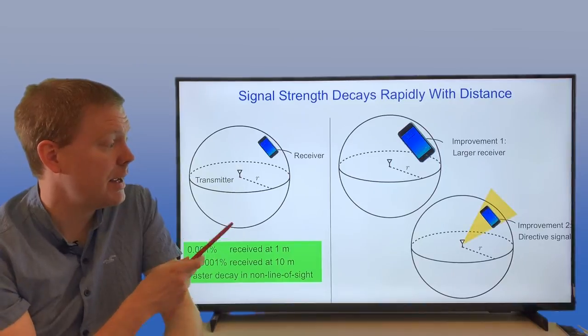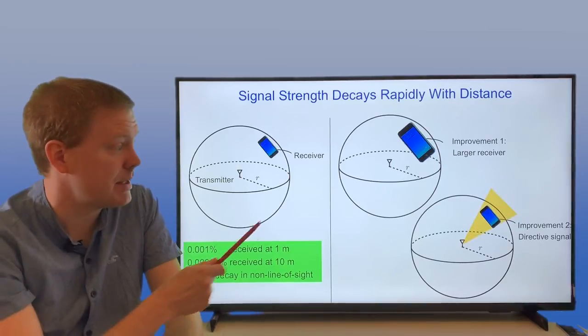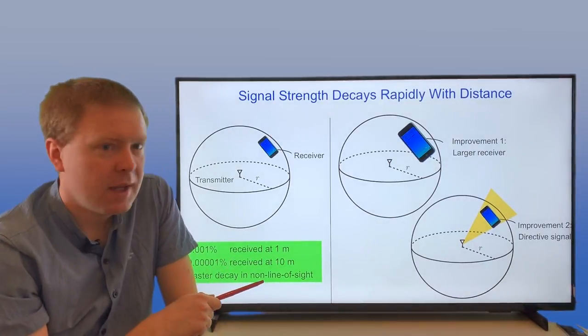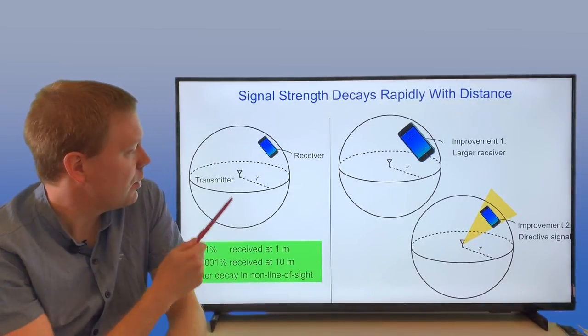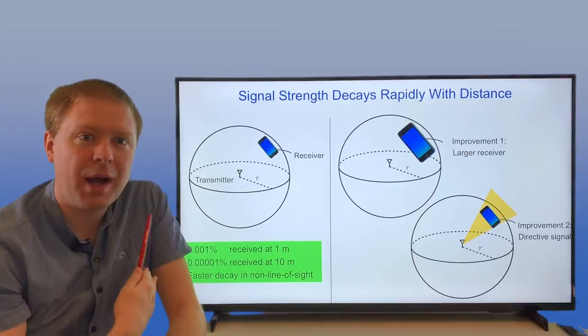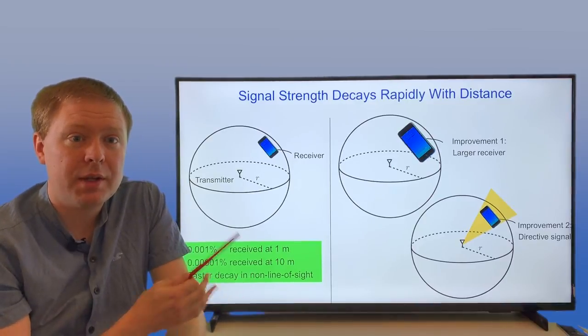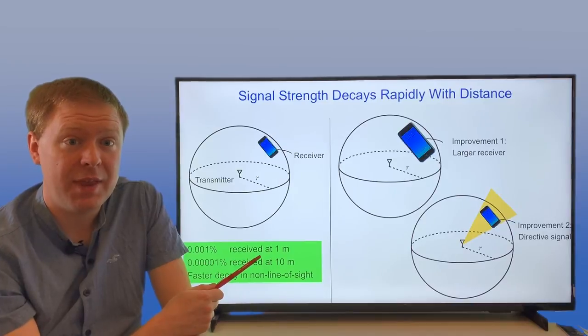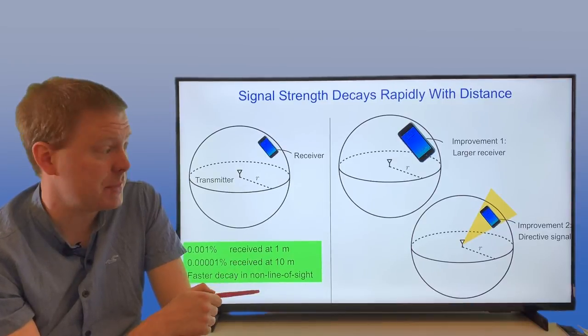Another option is to have a directive transmission from the transmitter towards the user. To achieve that, we're still spreading out power in all directions, but we're making sure that most of it is focused in particular directions. That's where Massive MIMO comes into the picture.